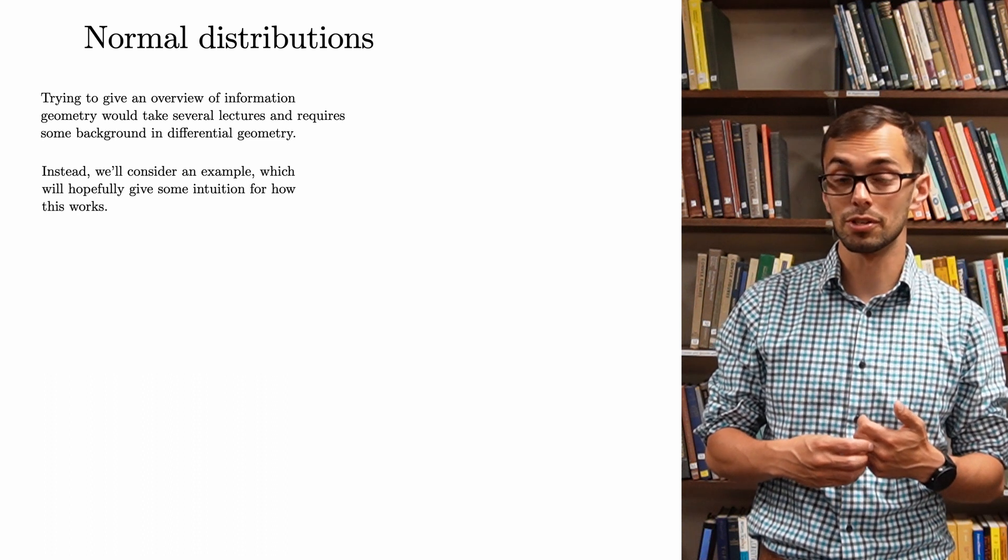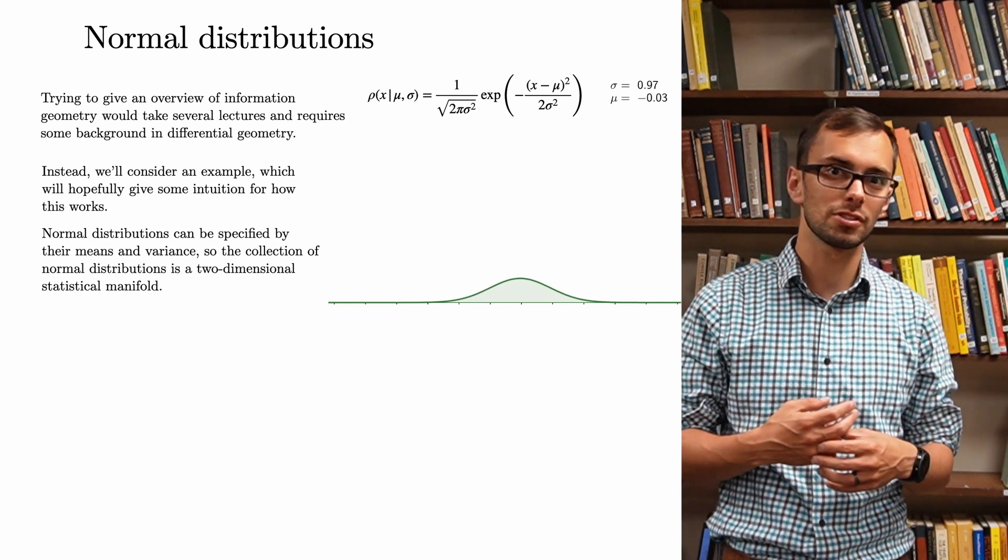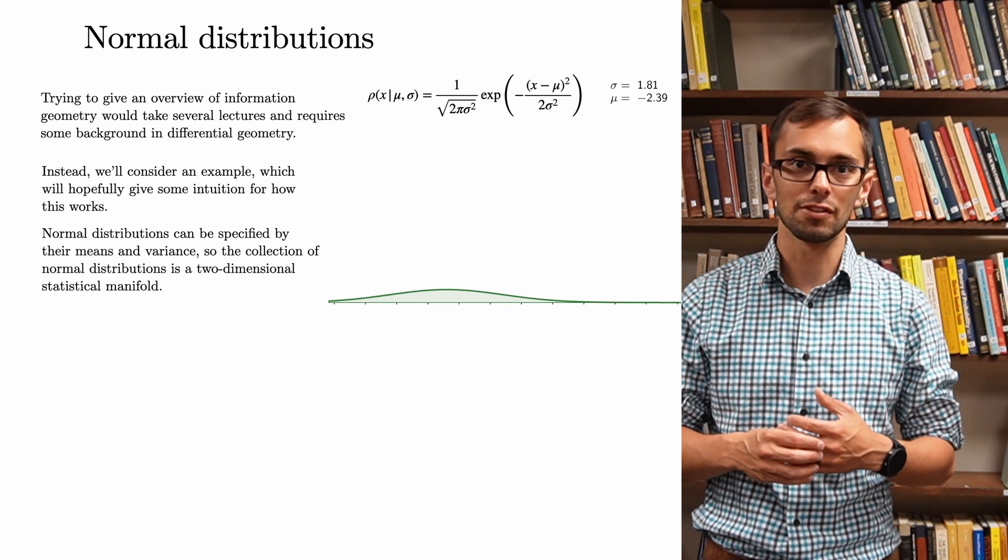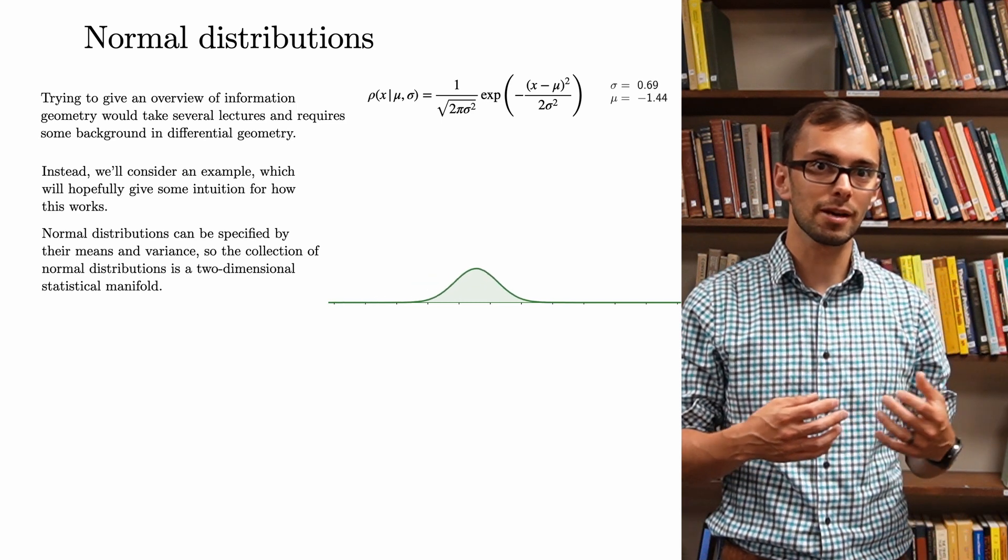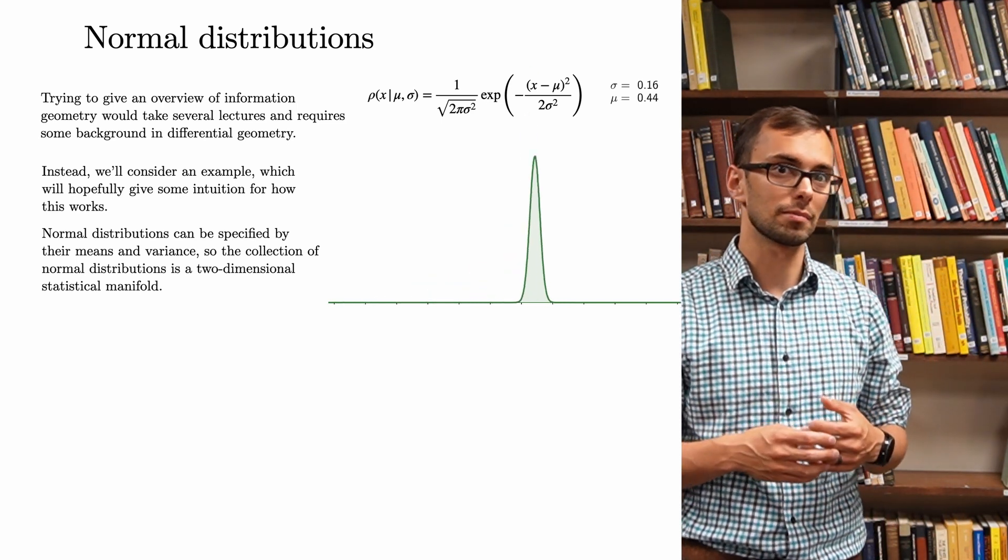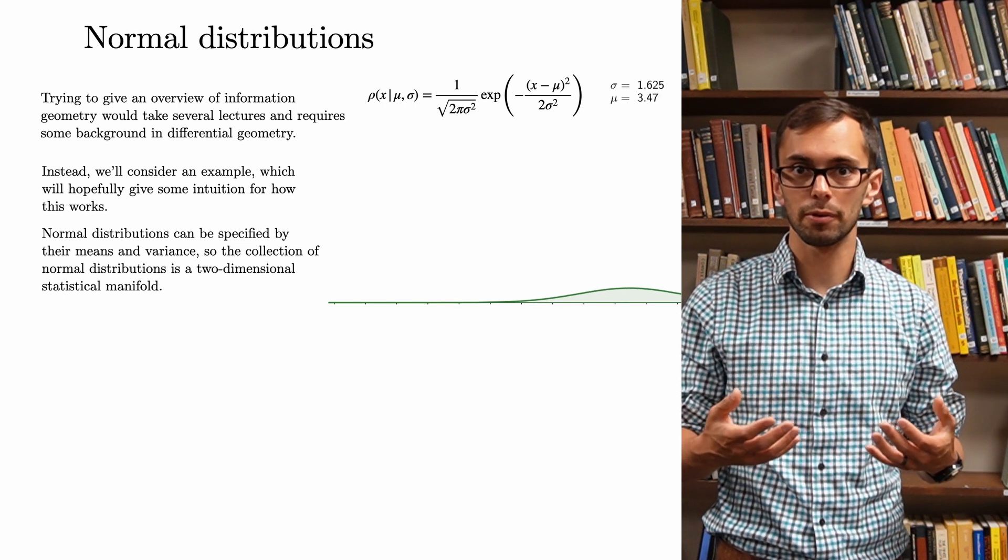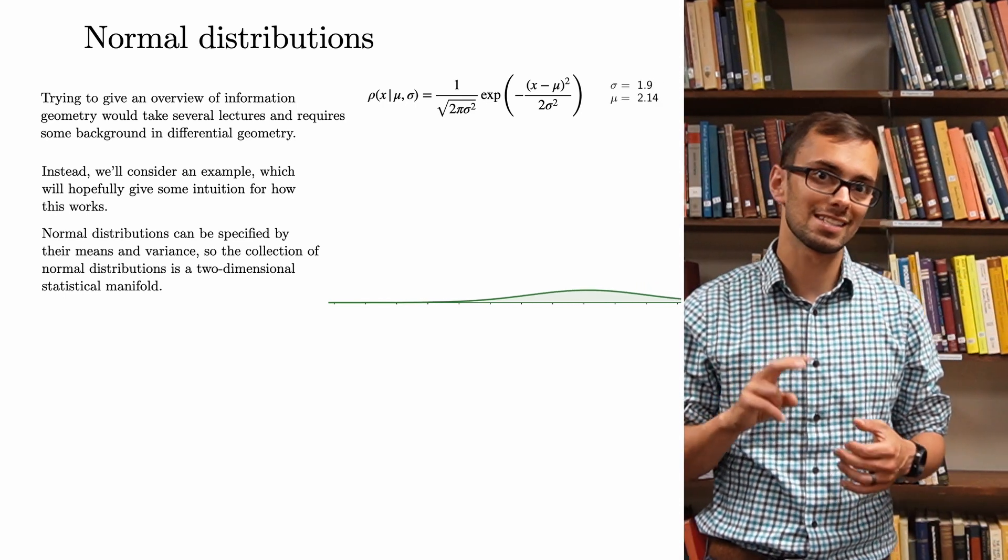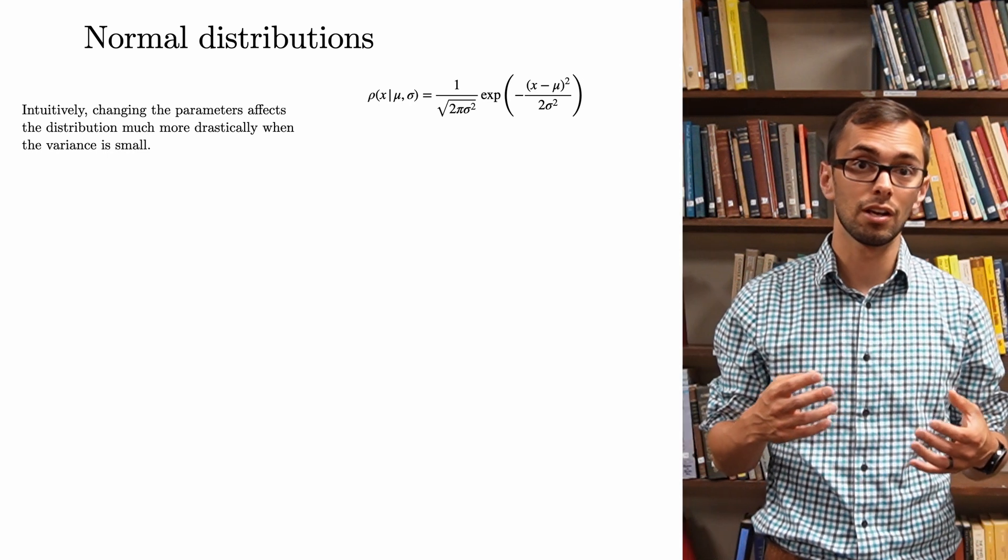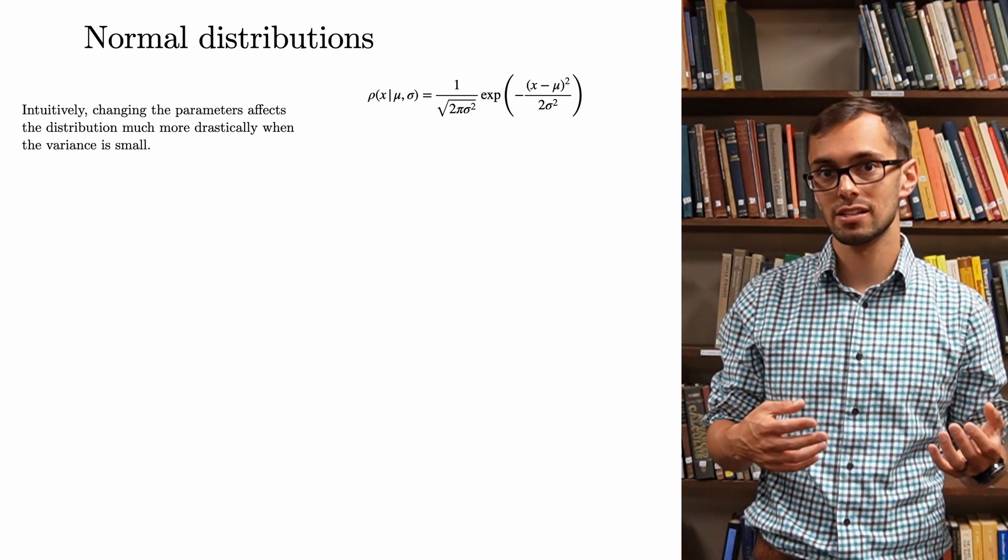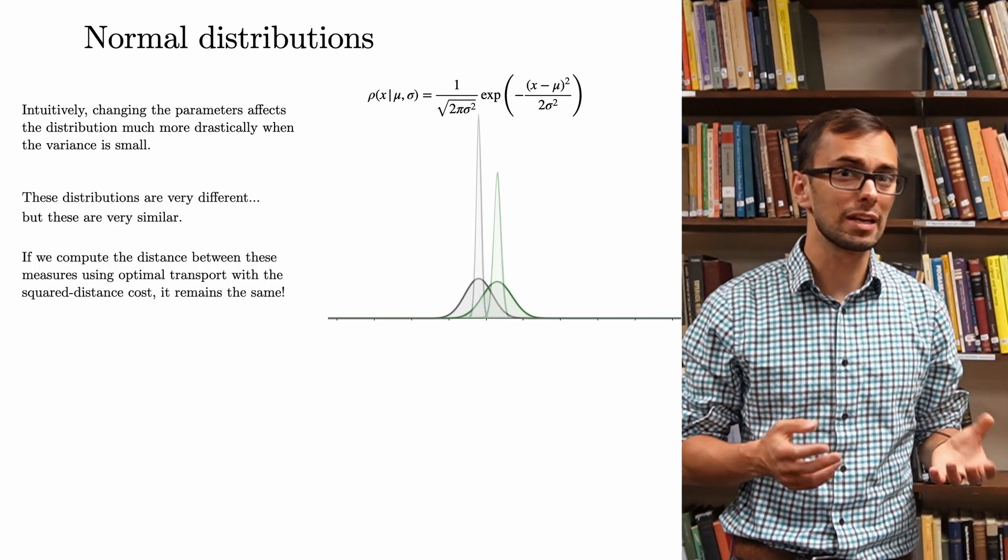Normal distributions are probably the most well-known distribution in statistics, and the family of normal distributions is a very important example in information geometry. In order to specify a normal distribution, we can specify the mean mu and the variance sigma. In other words, a Gaussian distribution depends on two parameters, and so the collection of all normal distributions is a two-dimensional statistical manifold. Intuitively, change of the parameters affects the distribution much more when the variance is small. For instance, these distributions are very different.